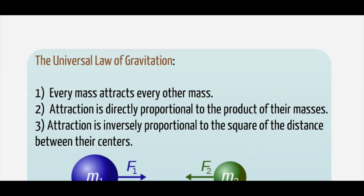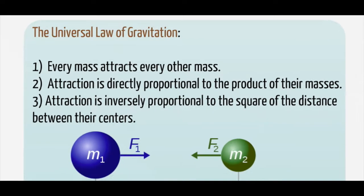The universal law of gravitation says that every mass in the universe attracts every other mass in the universe. The force of attraction is directly proportional to the product of the masses, so if you have two objects, M1 and M2, then the product M1 times M2 is going to be proportional to the force, and the attraction is inversely proportional to the square of the distance between their centers.